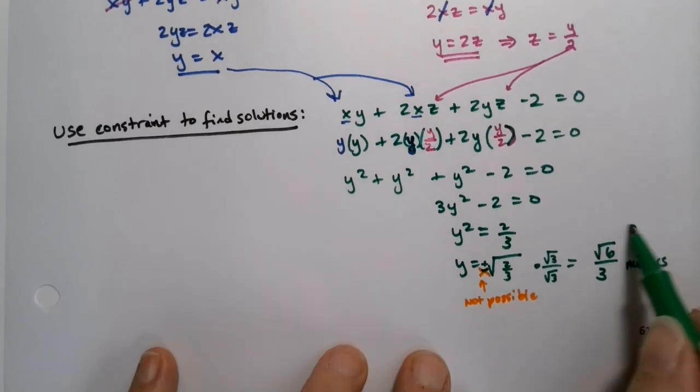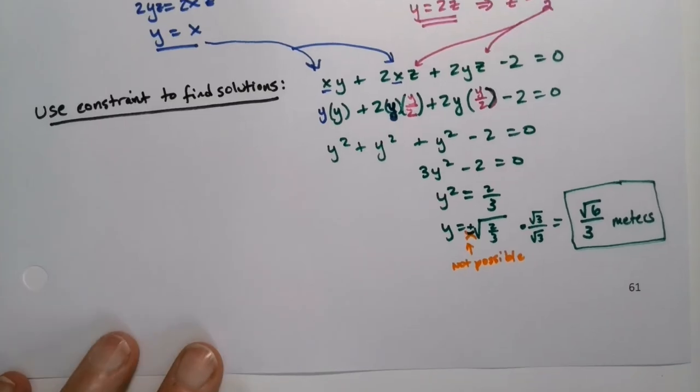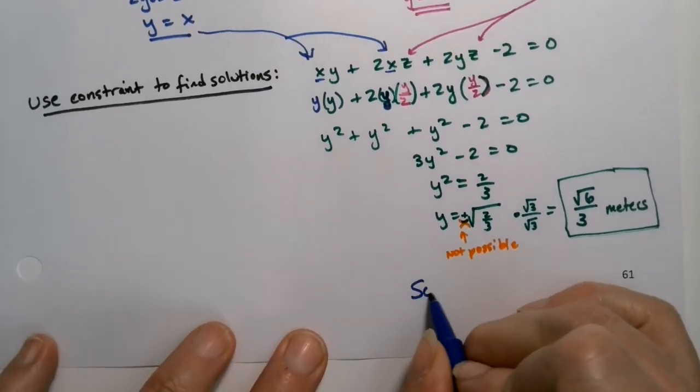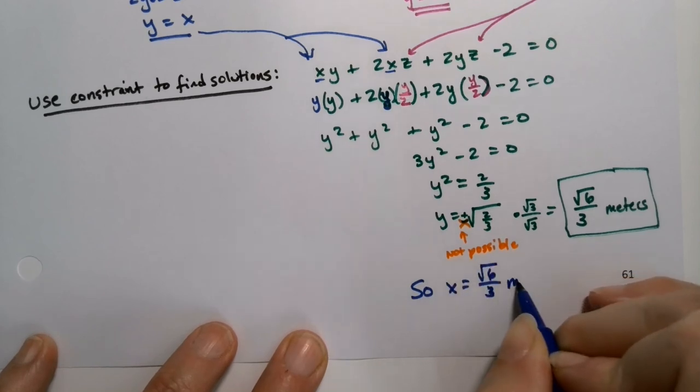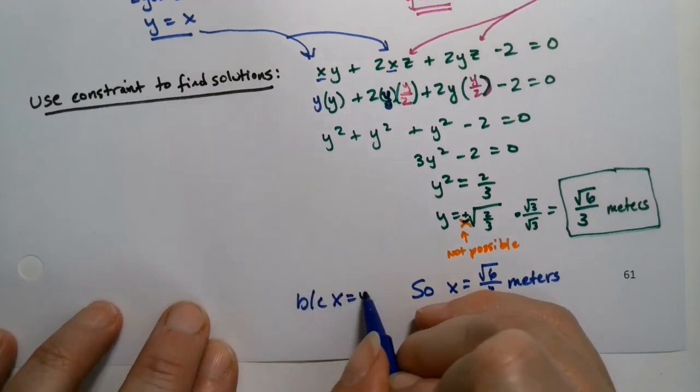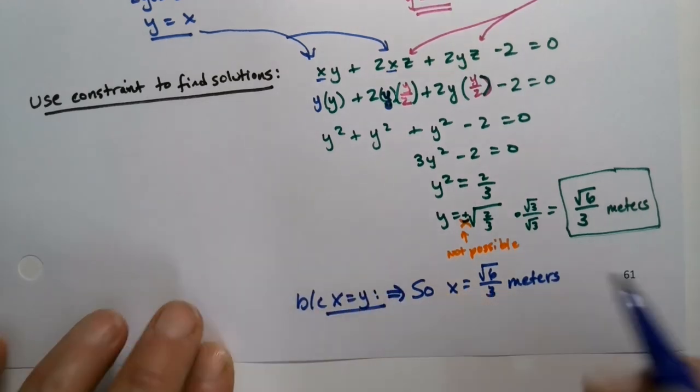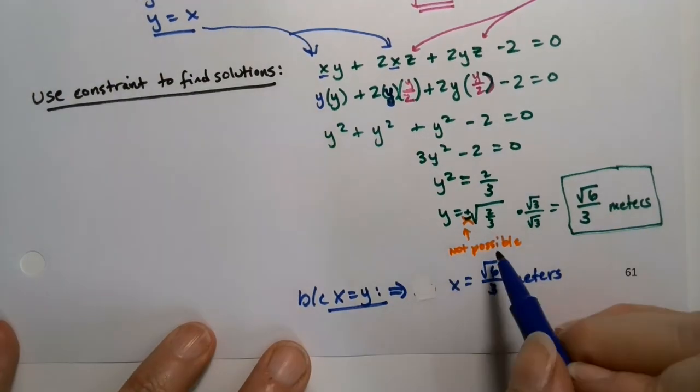So there we go. But then we know x is y. So x is the same thing. So x is also square root of 6 over 3, because x equals y. So there's that dimension.